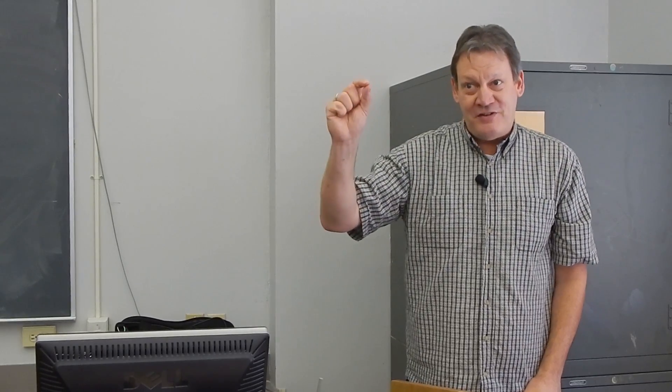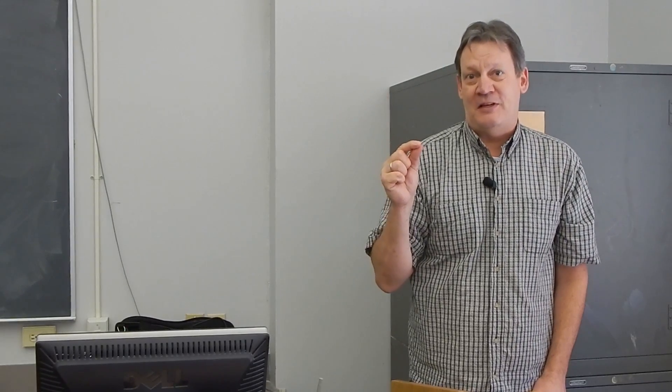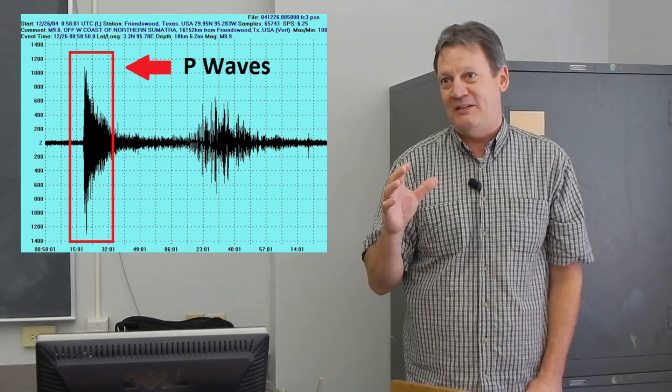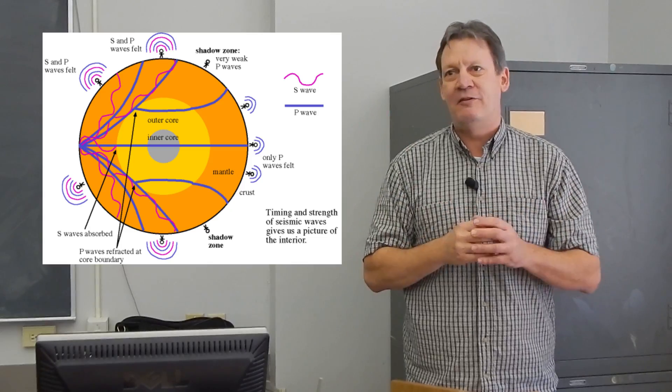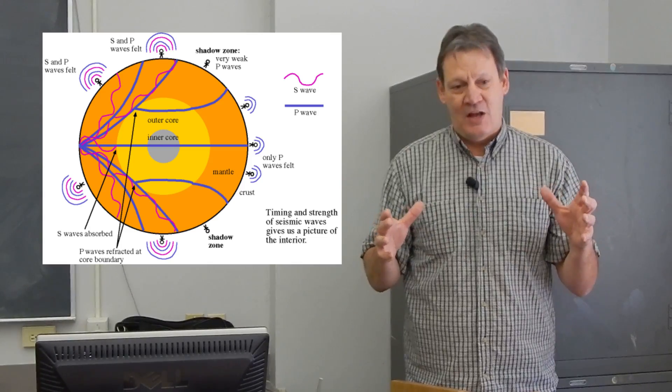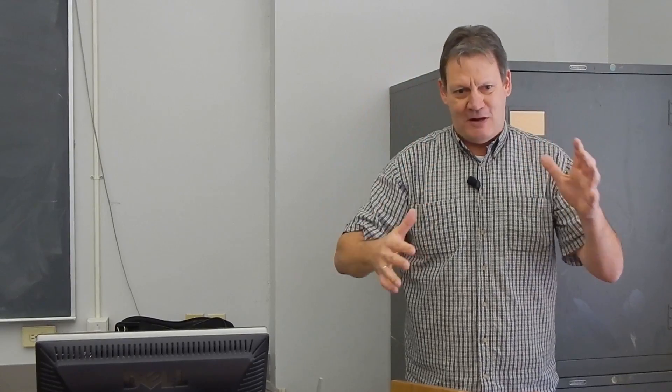The compressional waves, we call them also the P waves, the primary waves, they travel really fast, about twice the speed as the shear waves. And they travel through any medium, they travel through liquids, solids and through gases. And so they arrive anywhere.